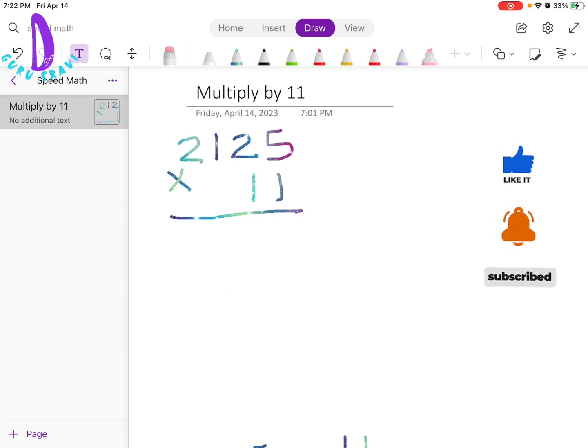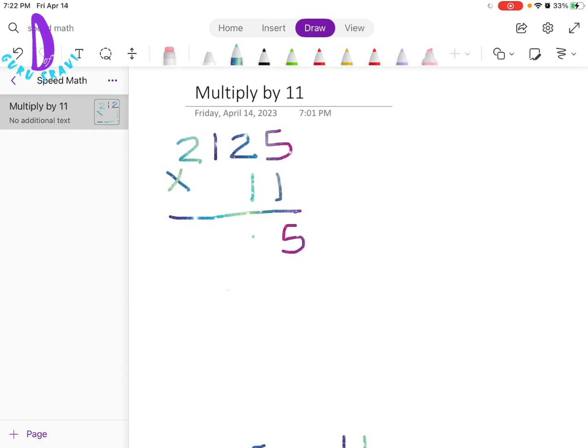Usually we multiply by 11 like this. For example, 2125 times 11. 5 times 1 is 5, 2 times 1 is 2, 1 times 1 is 1, 2 times 1 is 2 again.